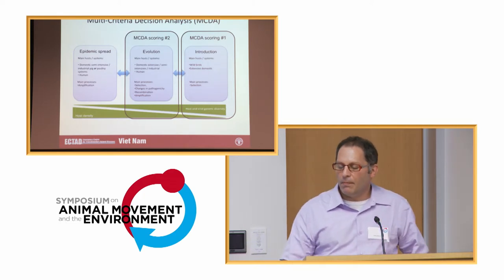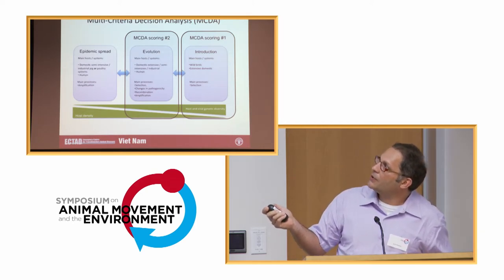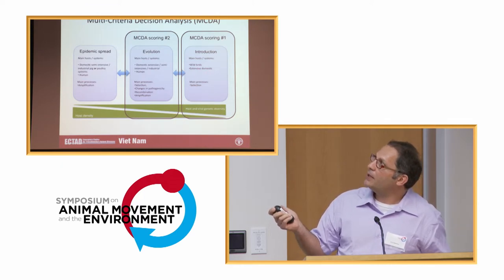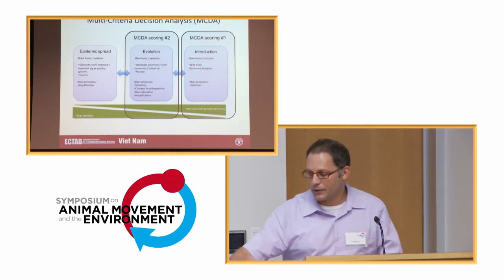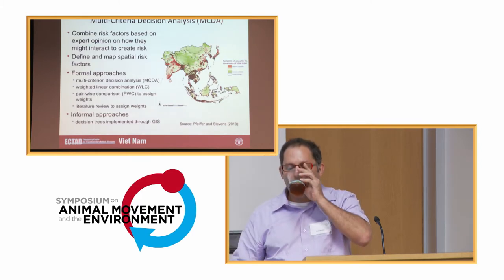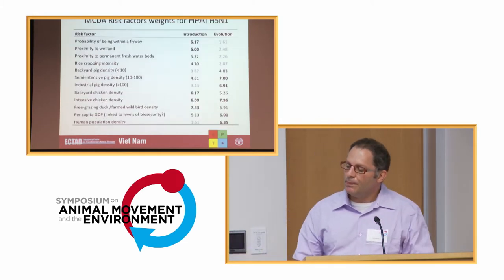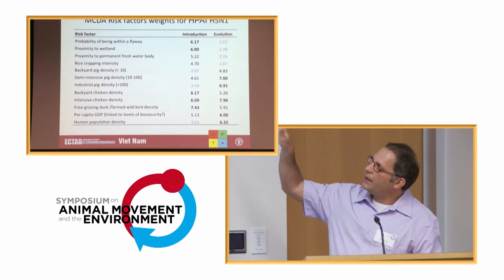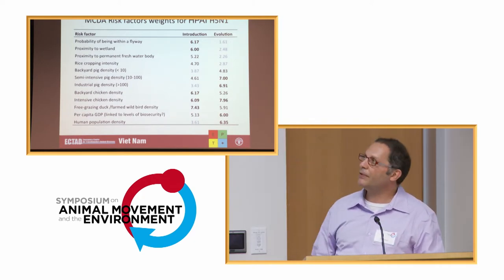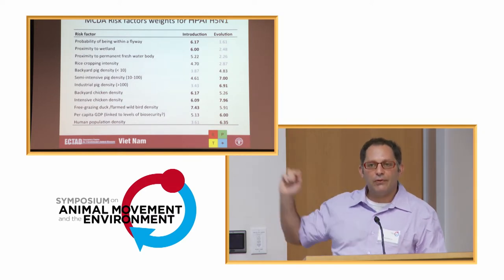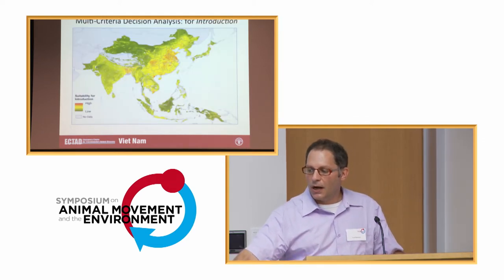The second way we've done modeling is to look at evolution and introduction: once a virus is introduced into a habitat, what happens, and what are the likely places this would occur? Also, what places promote higher evolution of the virus? A group of experts has ranked what they think the role of each of these different risk factors is to the process of introduction versus evolution. From this process we're able to generate risk maps for introduction.